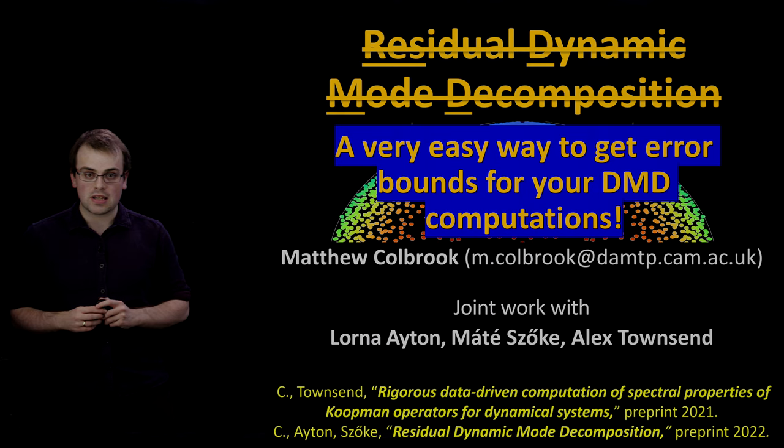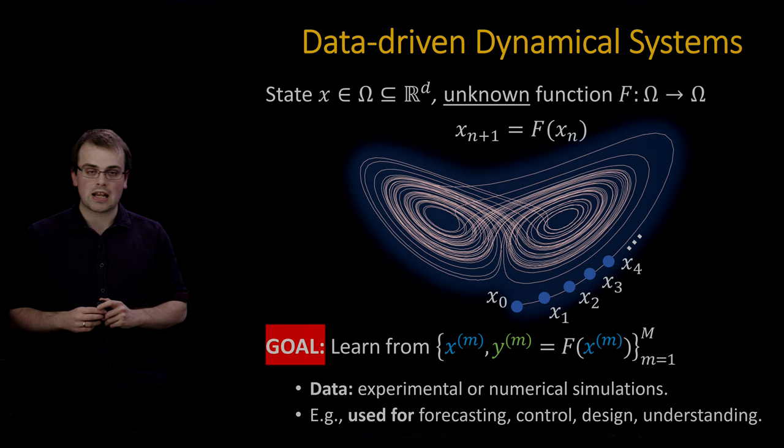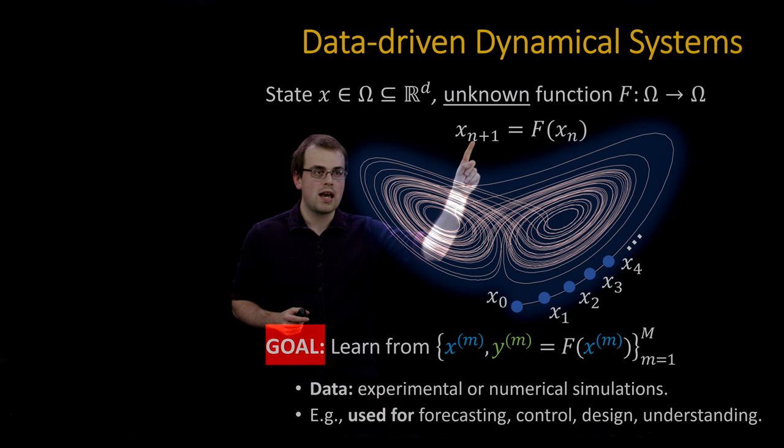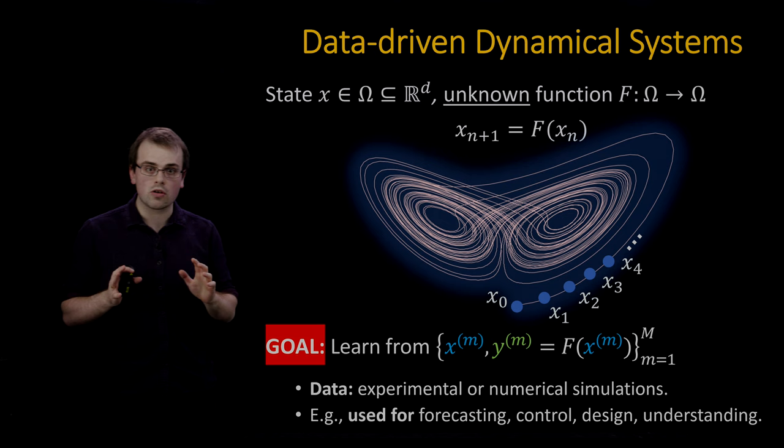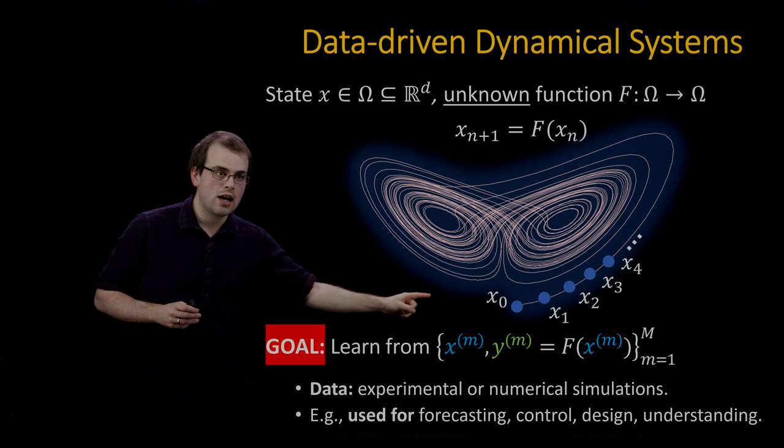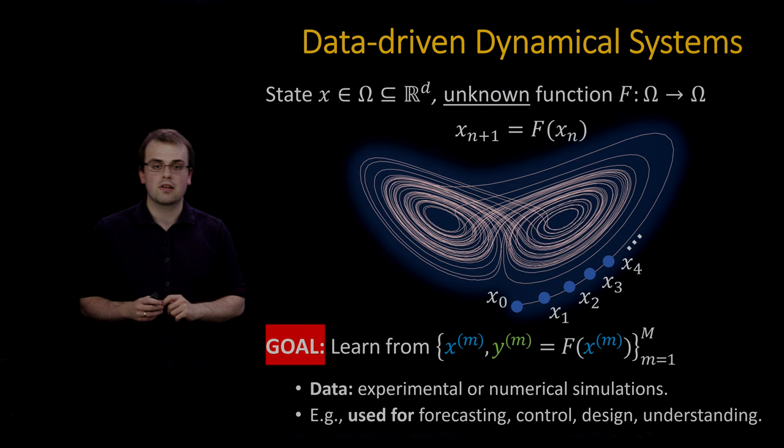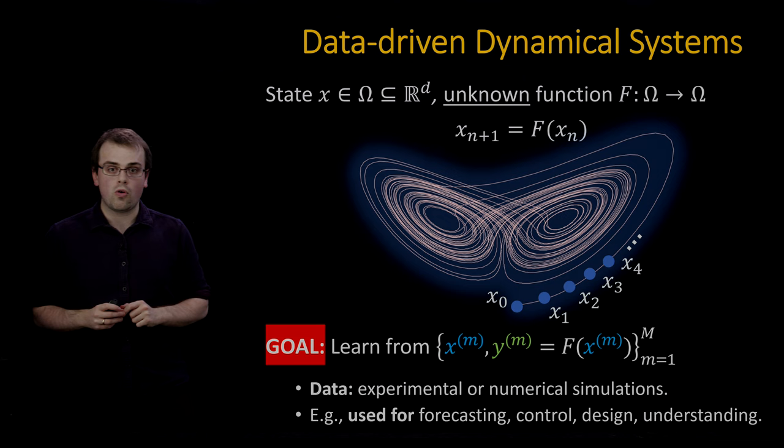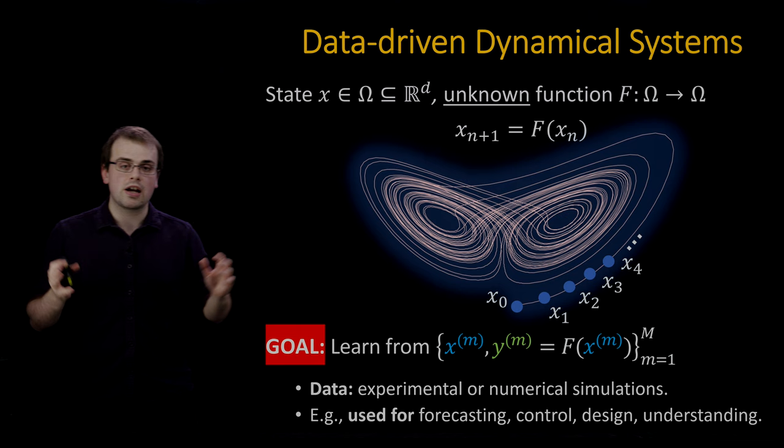We're interested in the following problem. We have some discrete time dynamical system with a state x inside some state space omega, governed by an unknown function f, so that the state at time n plus 1 is given by f of the state at time n. Our goal is to learn properties of this dynamical system by observing snapshot data or trajectory data in the form x (always in blue) and y (always in green), where y equals f of x.